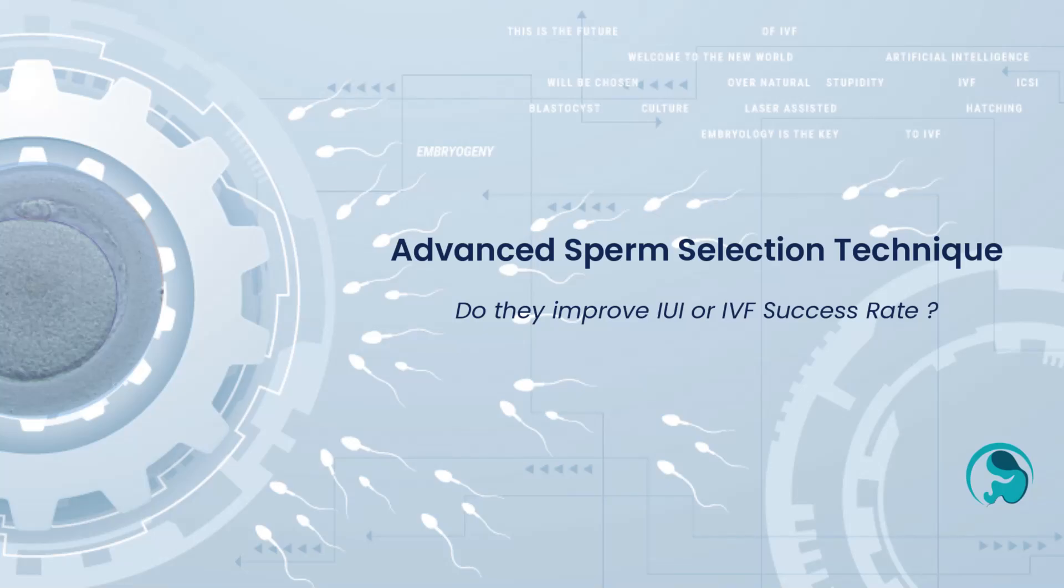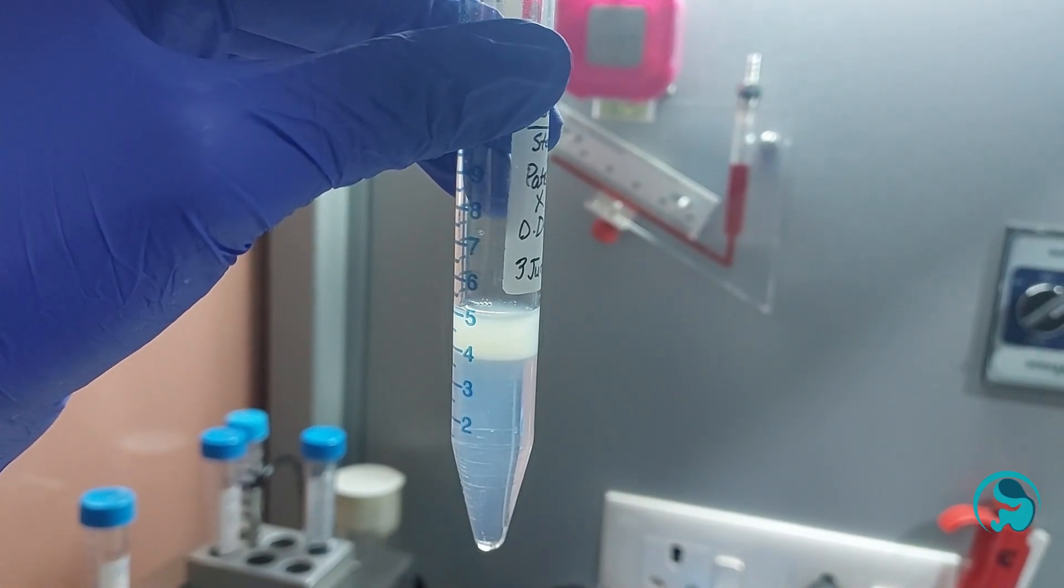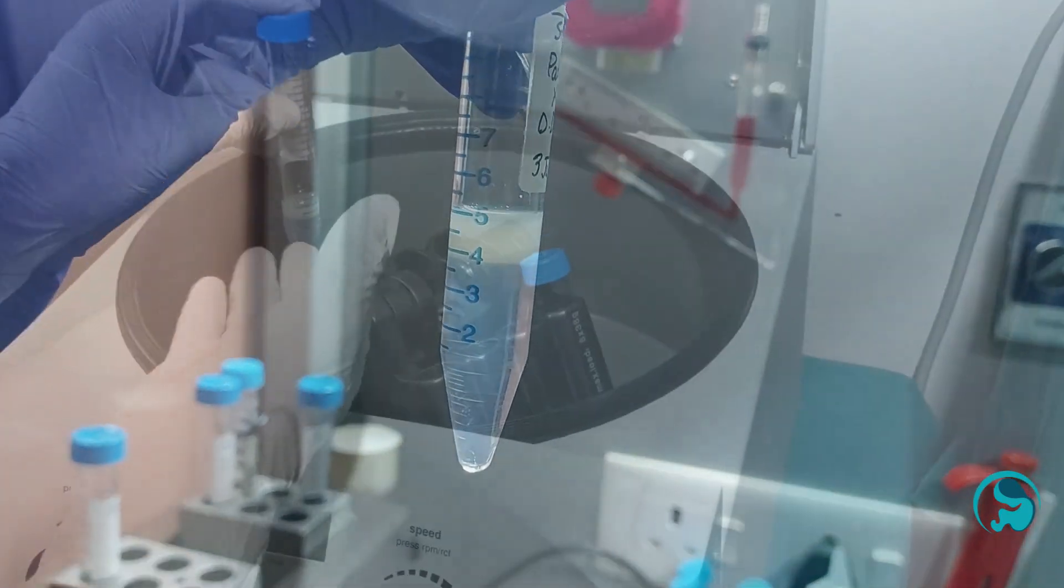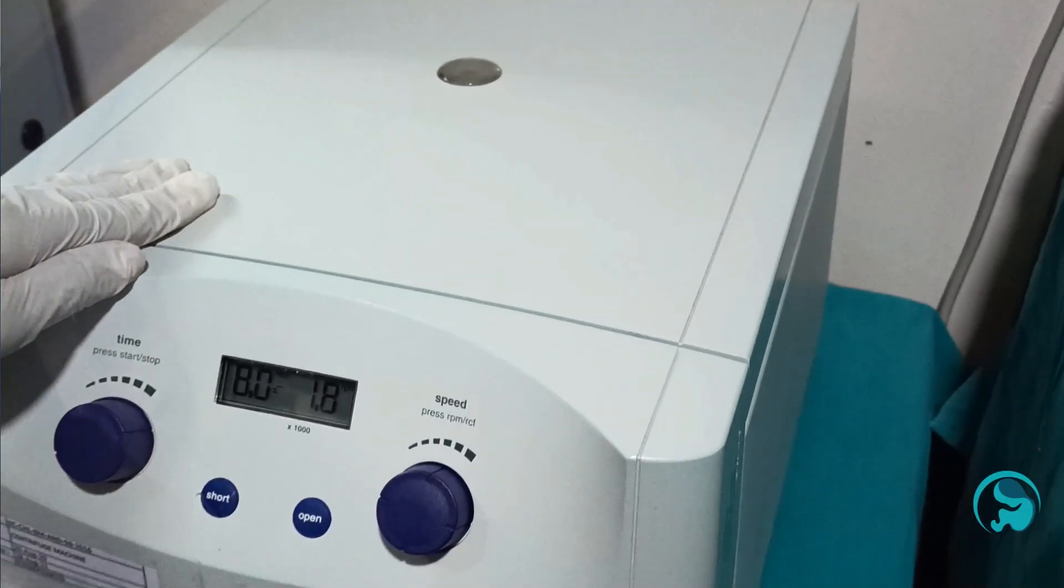Advanced sperm selection techniques: do they actually improve IUI or IVF success rates? Let's find out. In a traditional sperm preparation method like double density gradient, semen sample is loaded into a test tube and the test tube is then rotated at a very high speed in a centrifuge machine.